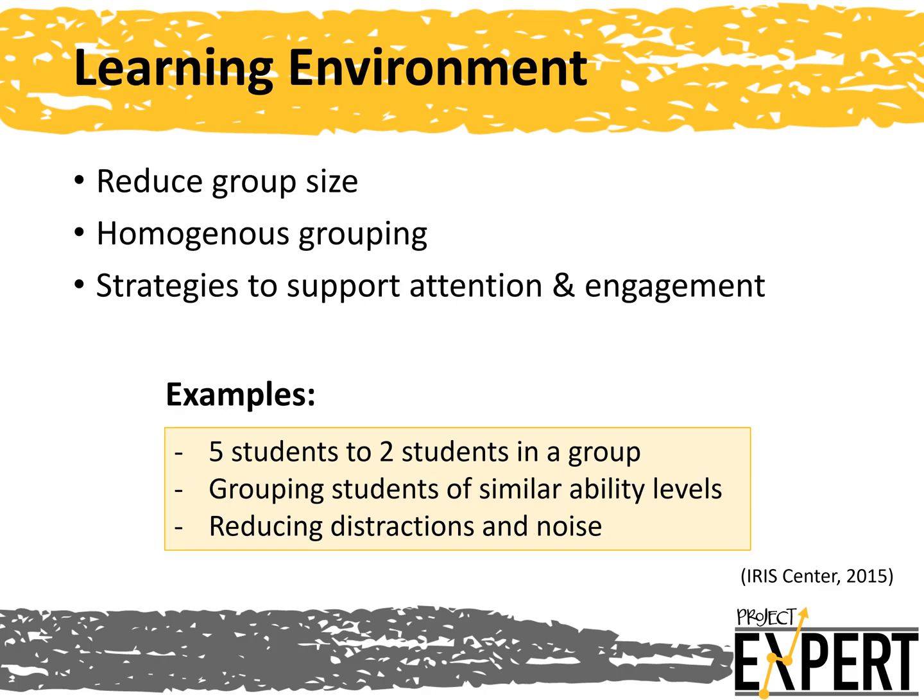Another way to adapt interventions is to change the learning environment. This may look like reducing the group size, using homogeneous groupings, and implementing strategies to support attention and engagement. Some examples include going from 5 students to 2 students in a group, grouping students of similar ability levels, and reducing distractions and noise. Whatever adjustments you decide to make, it's important to document these changes and note when the changes were made on the student's graph. Then, when viewing the graph, you will be able to see whether the adjustments correlate with improvements in the student's reading or whether further adjustments need to be made.